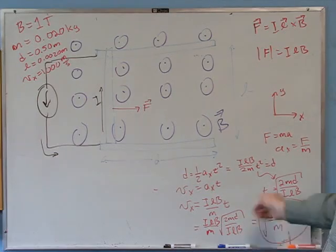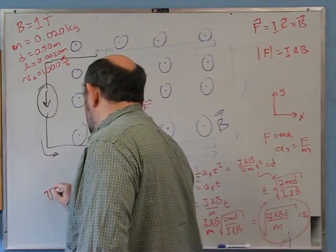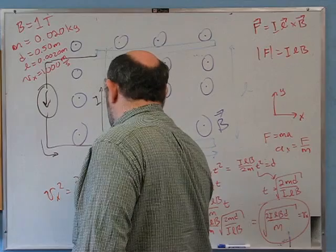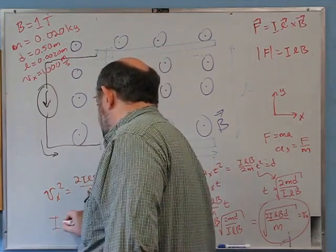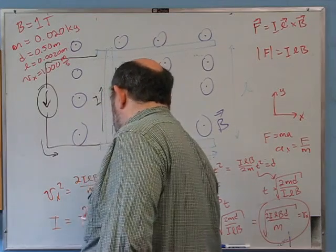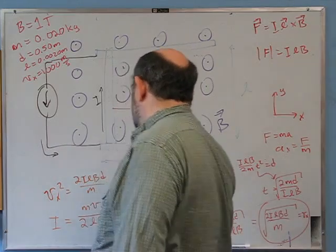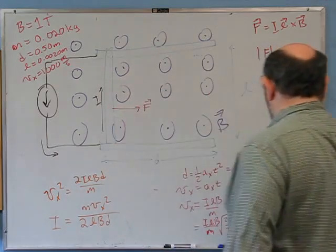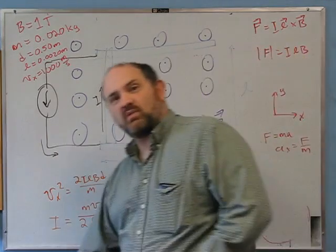Starting from Vx = √(2ILBd/m), squaring both sides gives Vx² = 2ILBD/m. Solving for the current: I = m·Vx²/(2·L·B·D). Now I substitute the numbers.